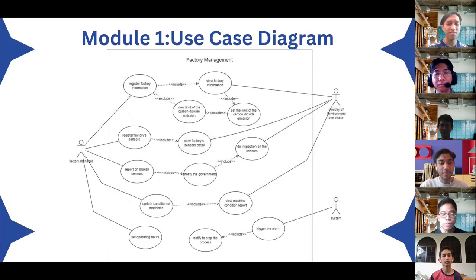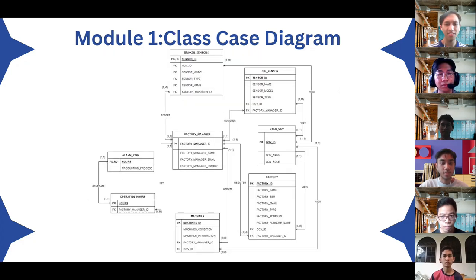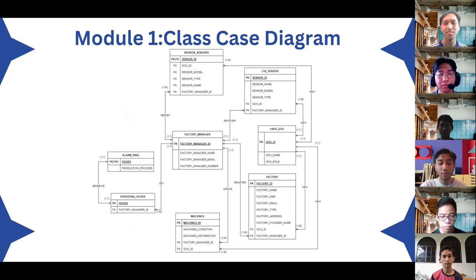For the use case diagram, we have three actors: factory manager, Ministry of Environment and Water, and the system. For the class diagram, we provide five features which are operator hours, machines, factory, CO2 sensor, and broken sensors.